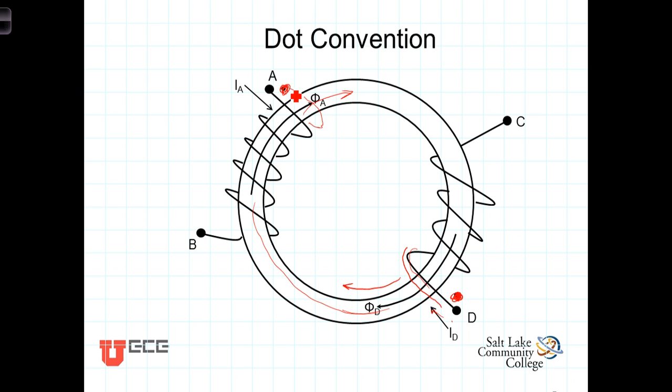On the other hand, had this current, or had this winding been in such a way that a current injected into this terminal created a magnetic field going in the opposite direction, then we would have dotted this coil and that coil.